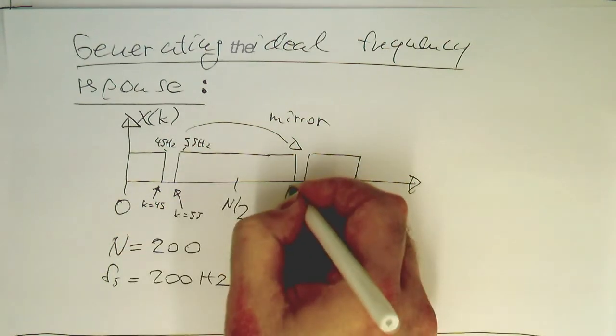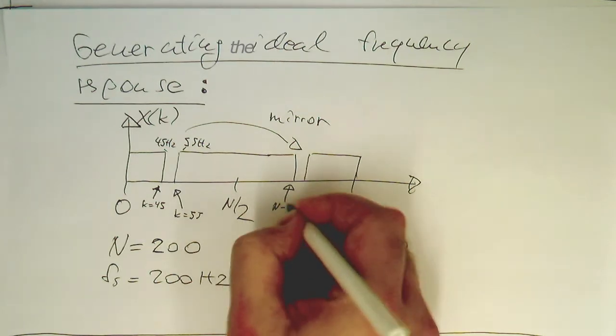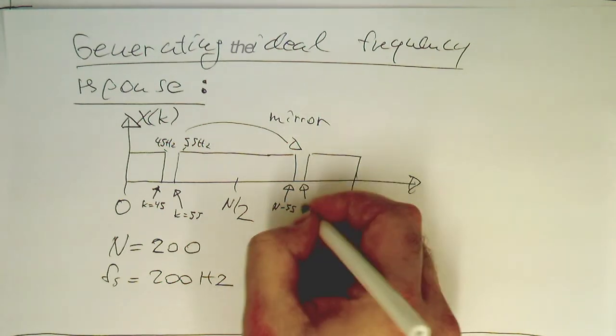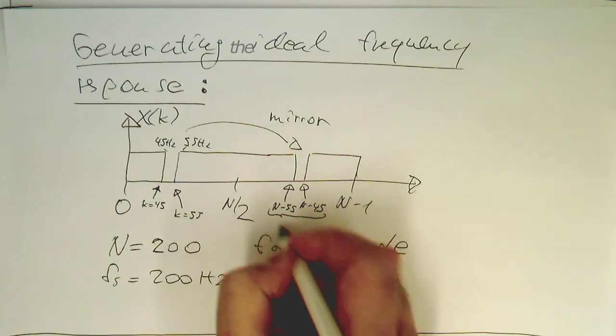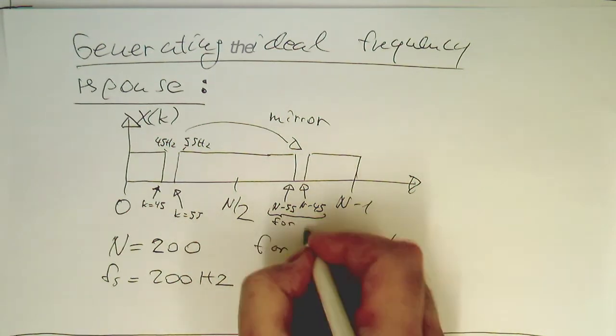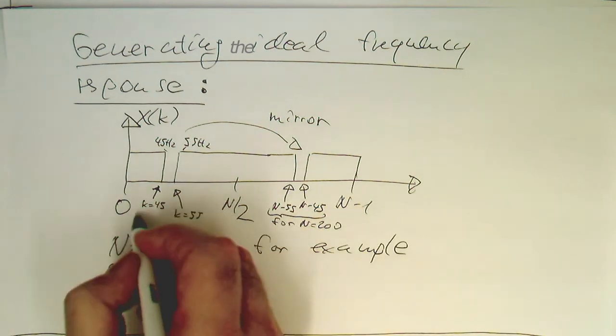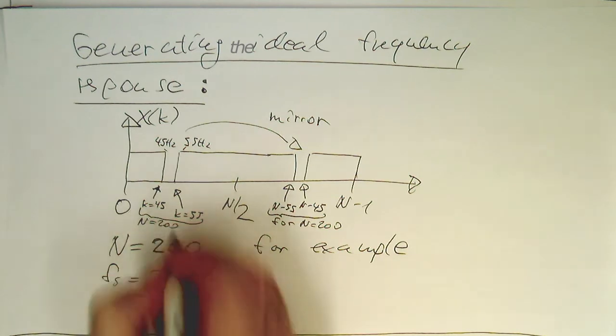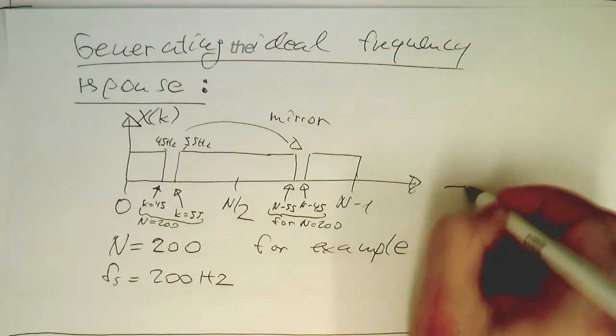And then this corresponds to k equals 55. And this corresponds here to n minus 55. And this one here to n minus 45. And so for n equals 200, the same here. So n equals 200, what we've written down there. So with this, we can just do a, once we have set this,